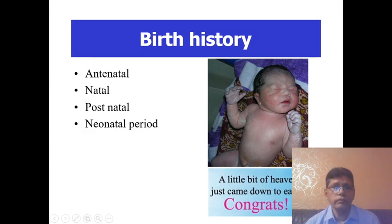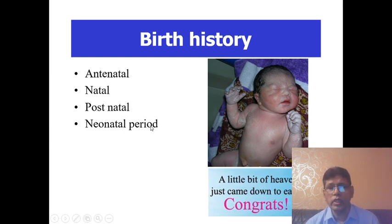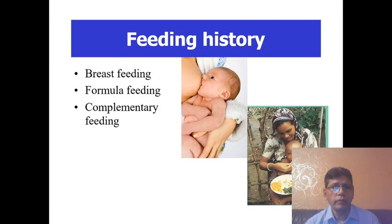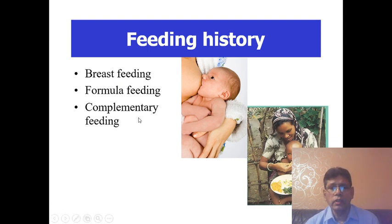Birth history covers the antenatal period, natal period, and postnatal period — including mode of delivery, the child's cry initially after birth, and neonatal issues like jaundice or convulsion. Feeding history covers breastfeeding initiation within one hour, complementary feeding initiation after six months with composition, and formula feeding if given.